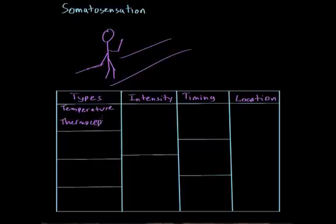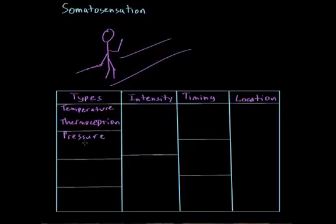He also needs to get information about pressure — when does he set his foot down on the ground, what if somebody came by and threw a hamburger at him, how hard did the hamburger hit him? So we need to get information about pressure. This is also known as mechanoception.